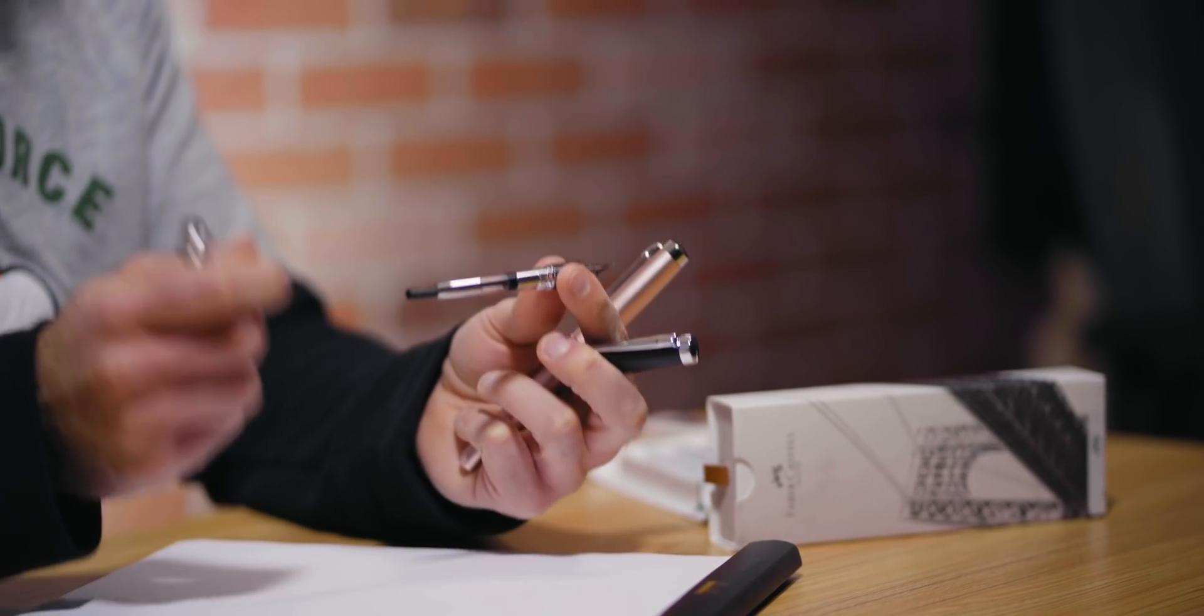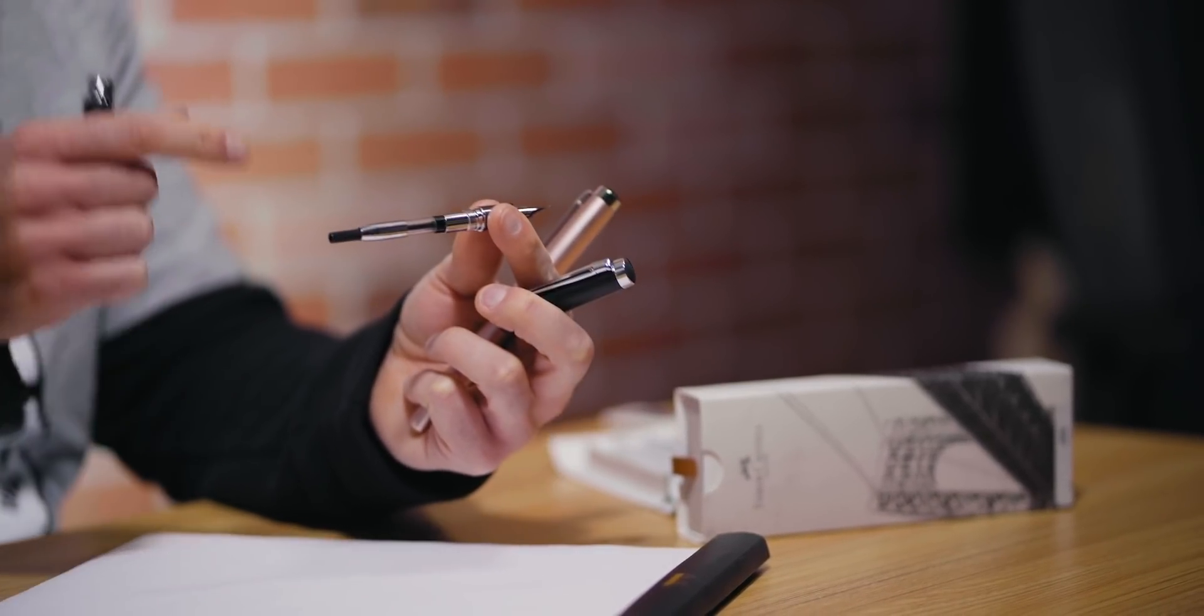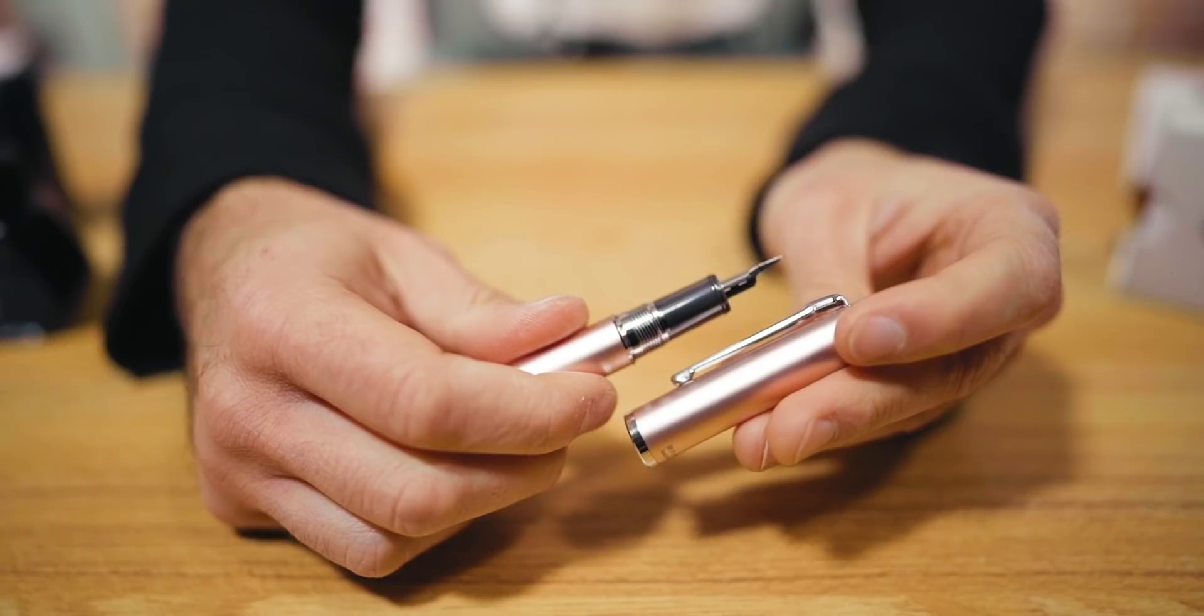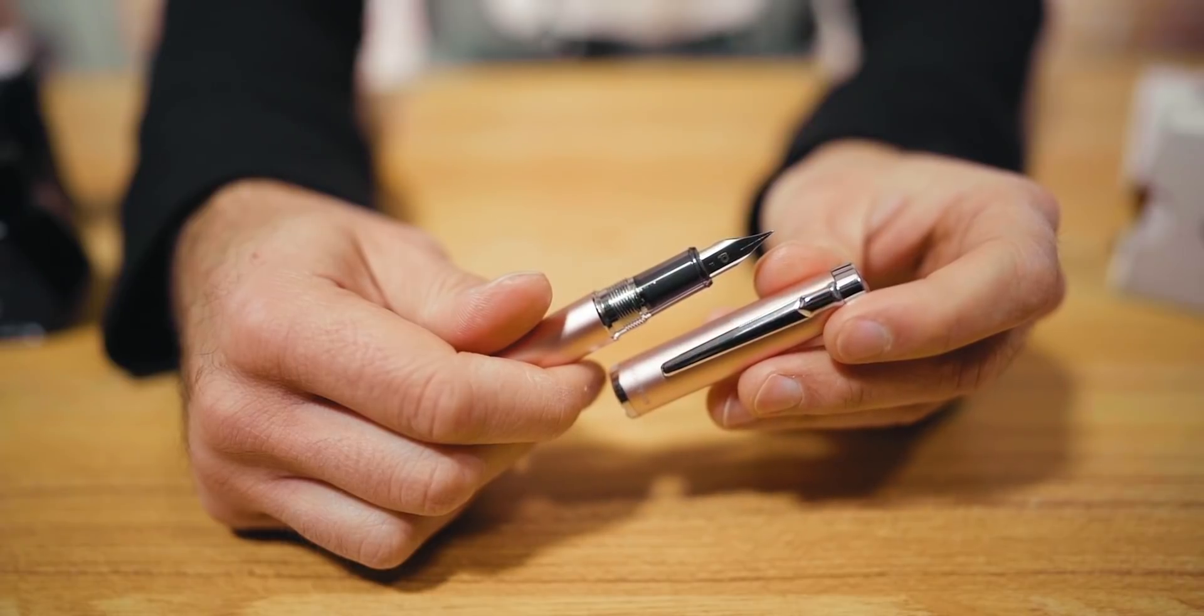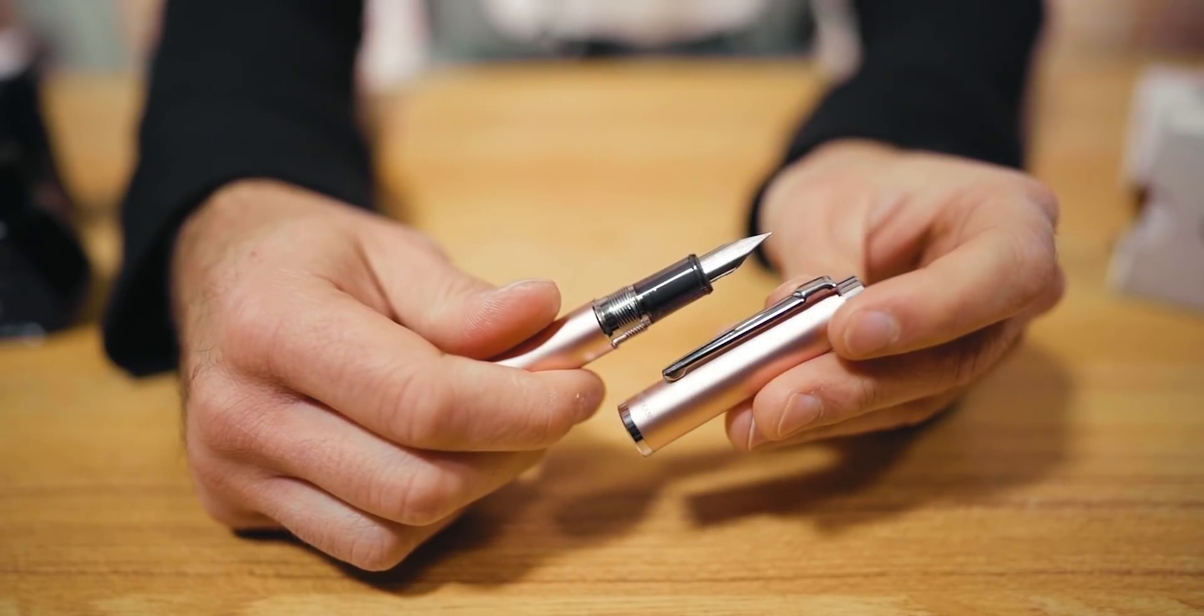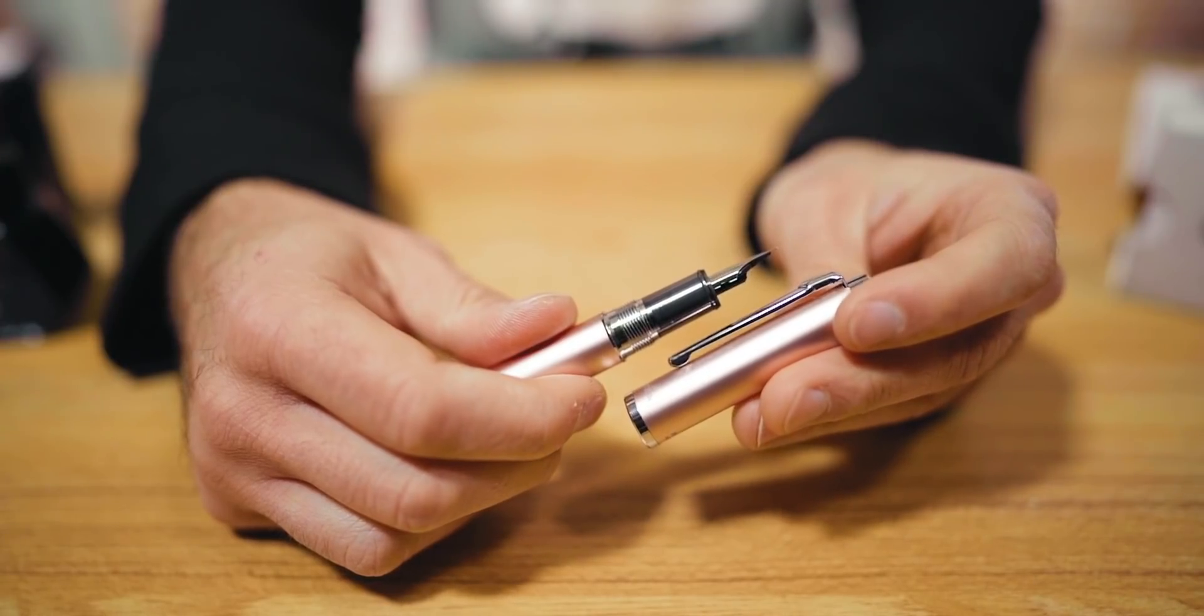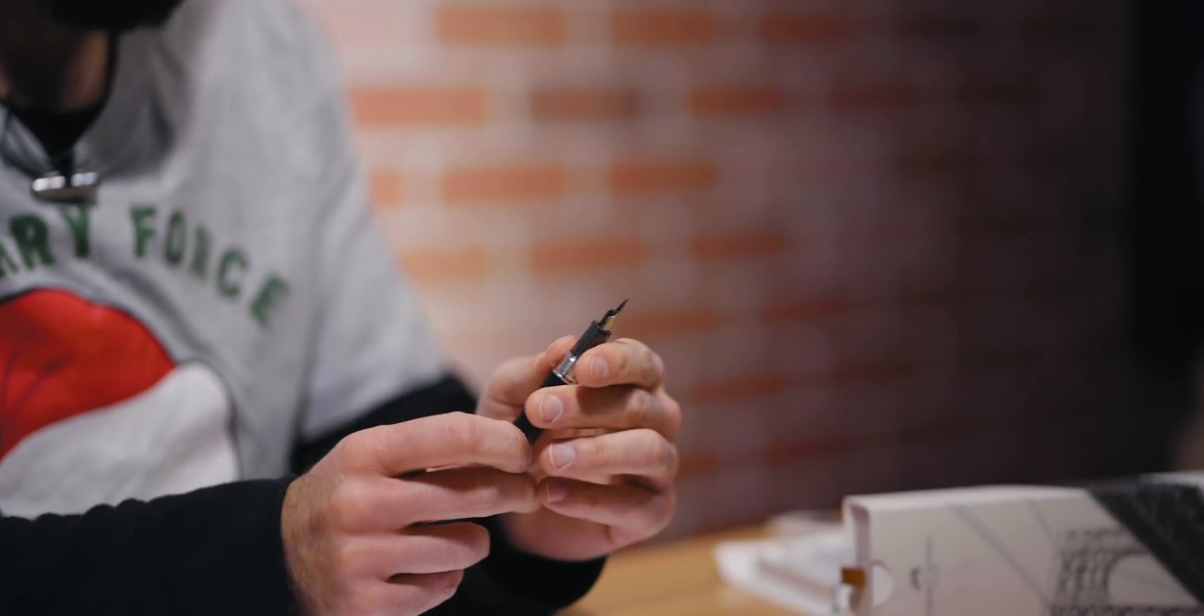The 3776 Century and the Procyon use the same cartridges and converters, which are the Platinum proprietary. Here I have the Platinum proprietary converter. However, it does not include this when you purchase the Procyon pen. It does include an ink cartridge. So the translucent section is a nice little feature about this aluminum body pen, which has a lacquered finish.